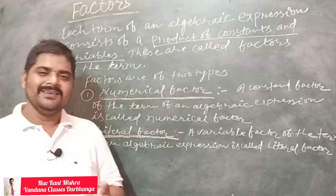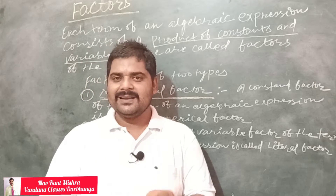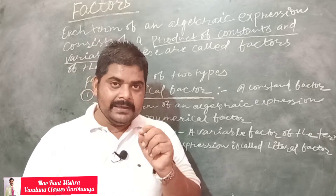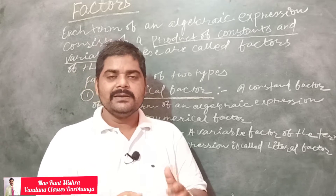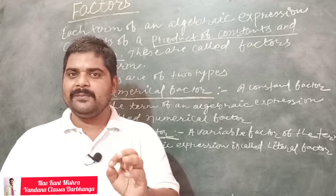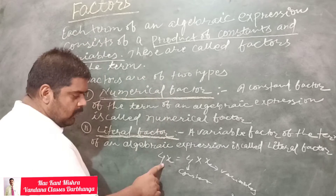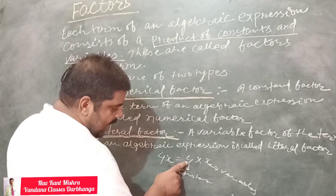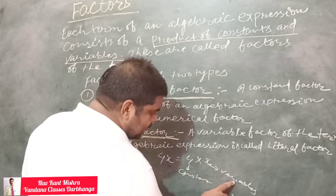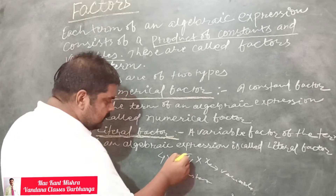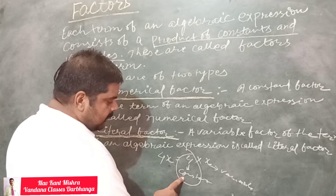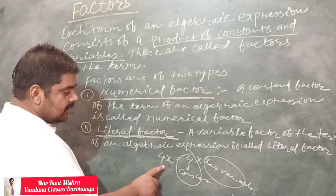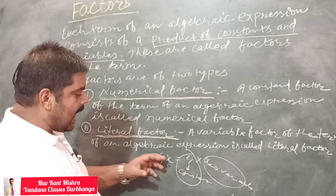You also know that terms of algebraic expressions contain variables and constants. Each variable and constant is known as a factor of algebraic terms. For example, 4x is the product of 4 and x, where 4 is a constant and x is a variable. 4 is one of the factors of 4x, and x is also a factor of 4x. This is why there are two factors.